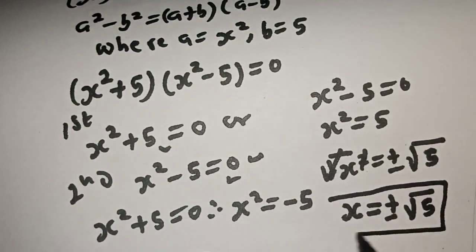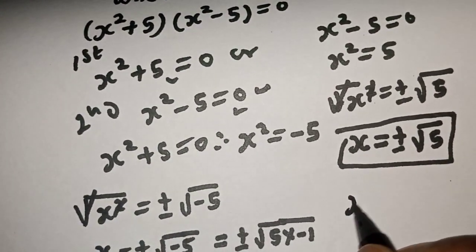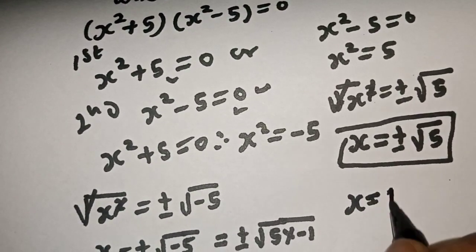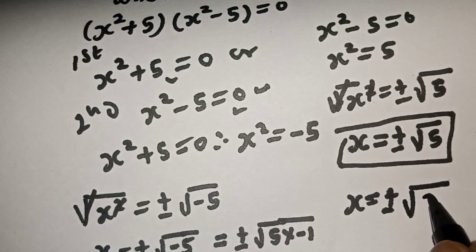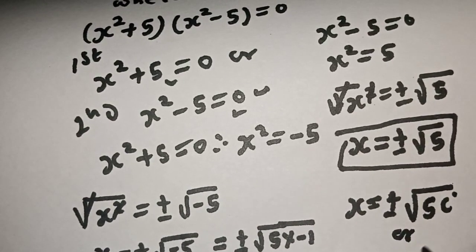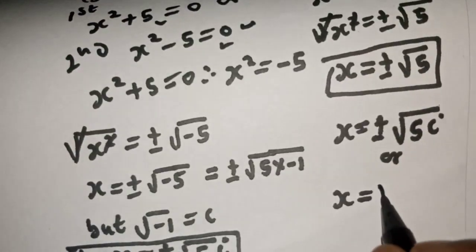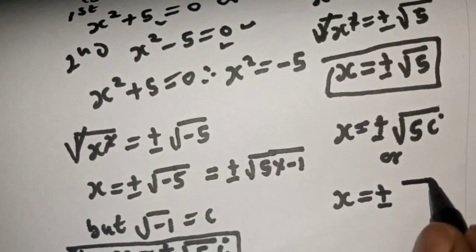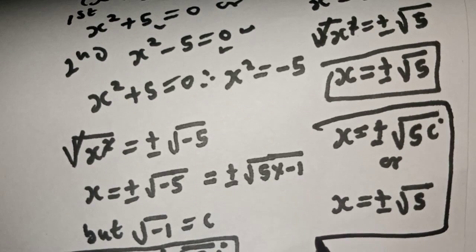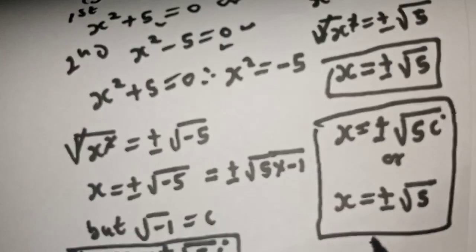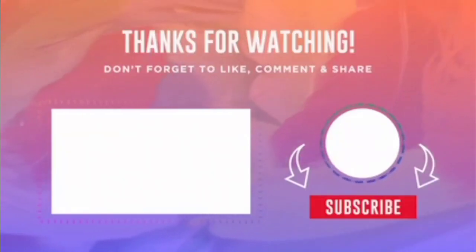This is the second value of s. Therefore our final answers are: s is equal to plus or minus square root of 5i, or s is equal to plus or minus square root of 5. These are the values of s. If you enjoyed the class, please don't forget to like, share, comment, and subscribe. Thank you.